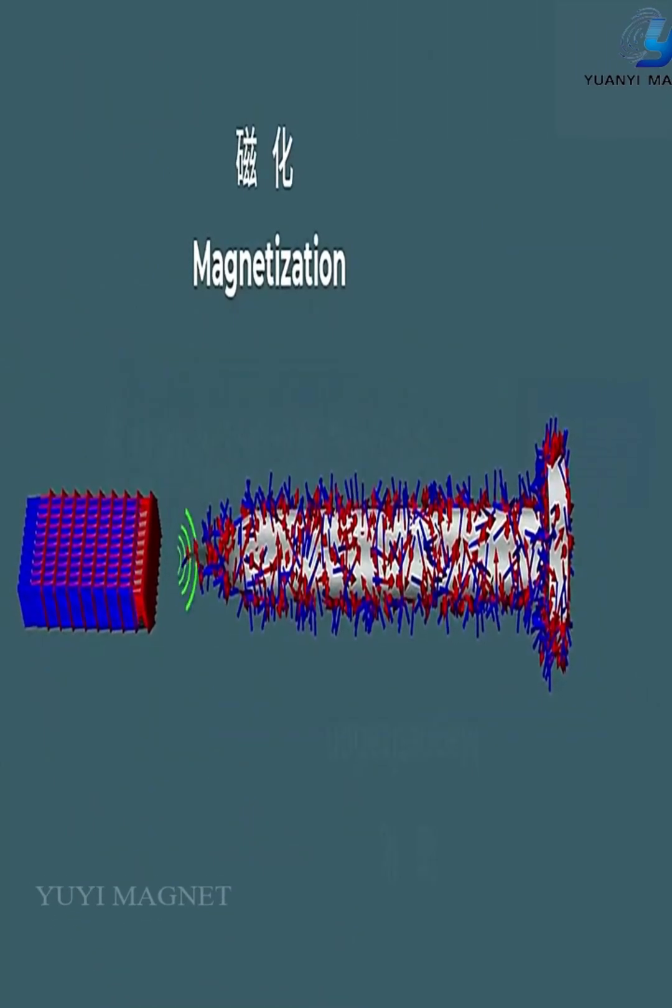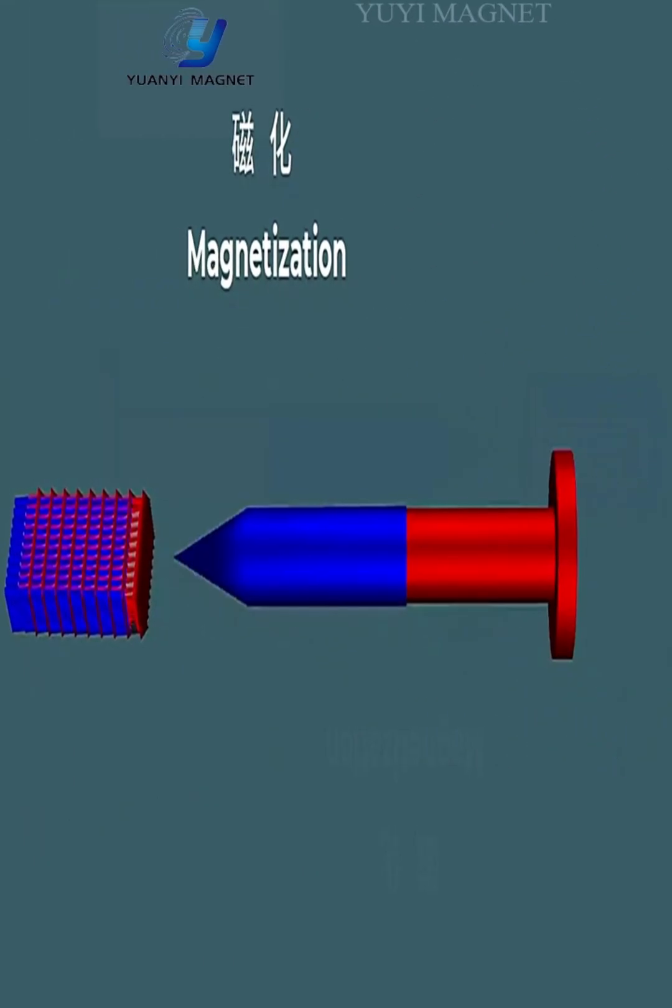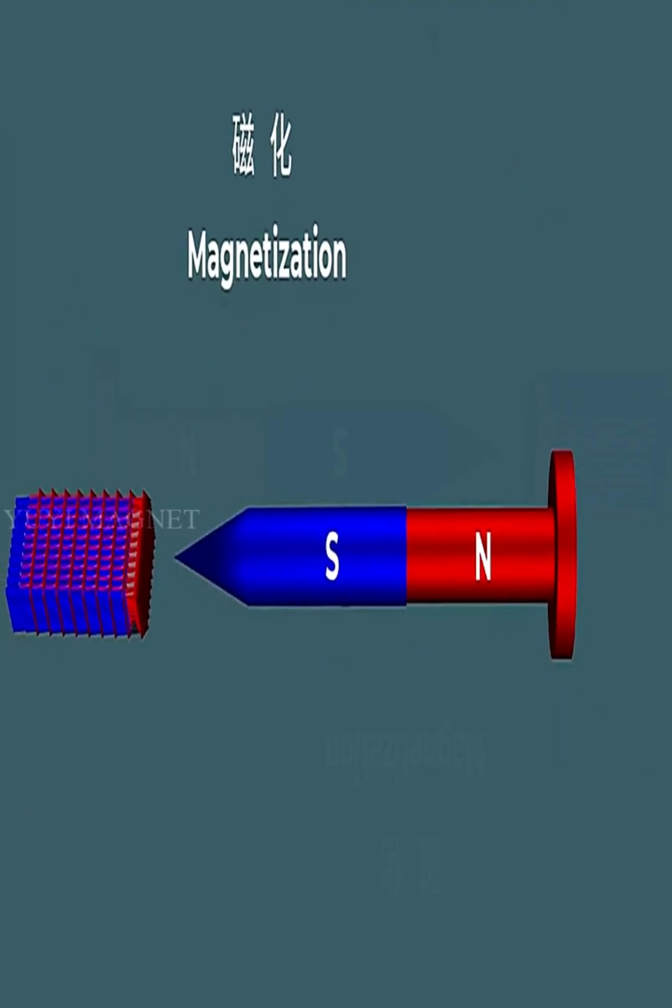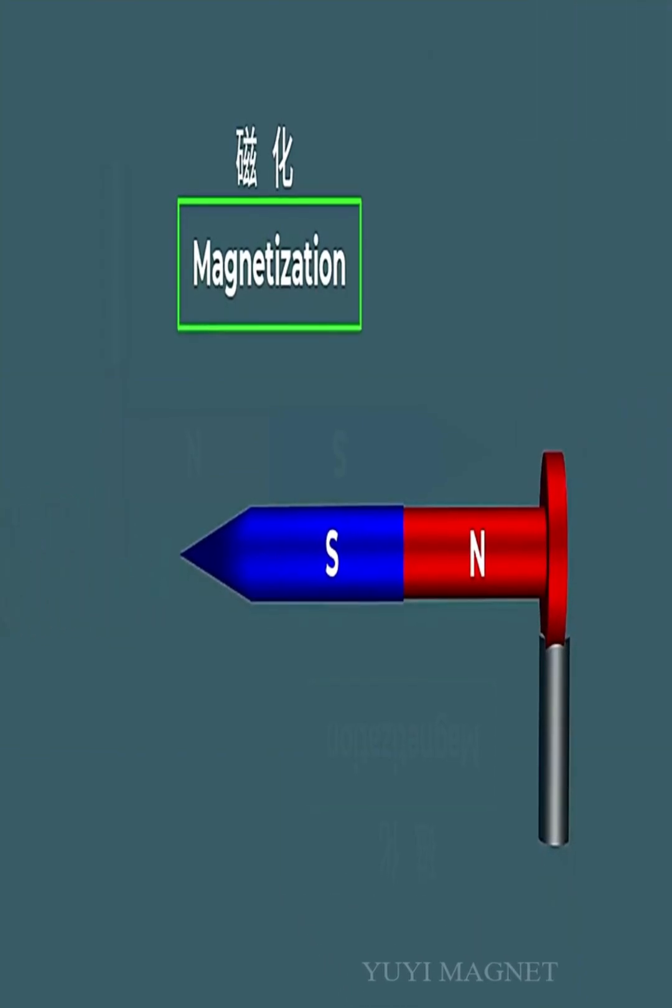Magnetic fields are generated in two ways. One is through the movement of electric charges. The other is through changes in the electric field. The movement of electric charges can be the flow of electric current.